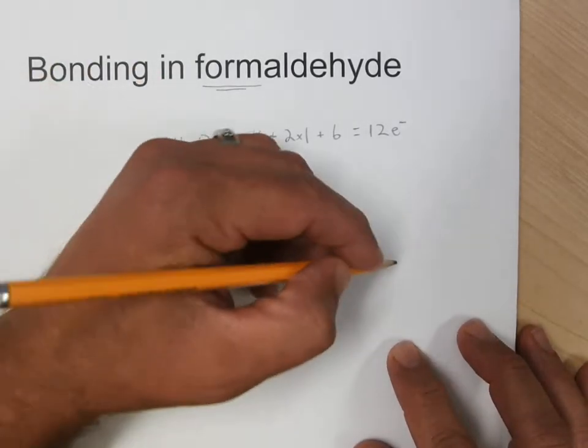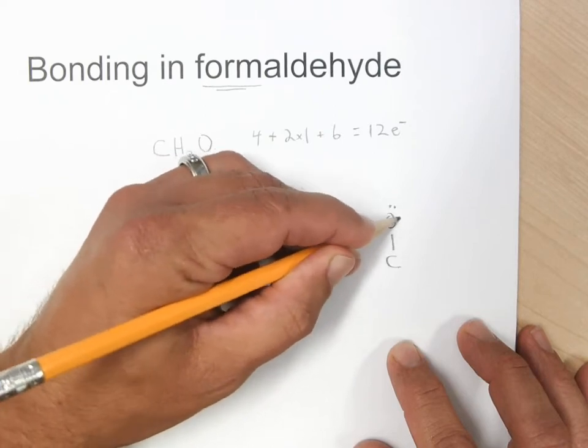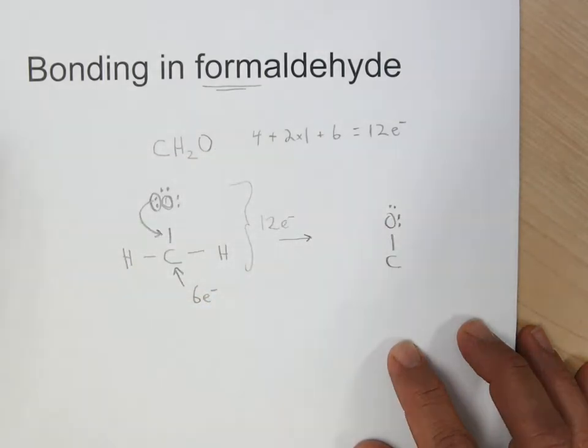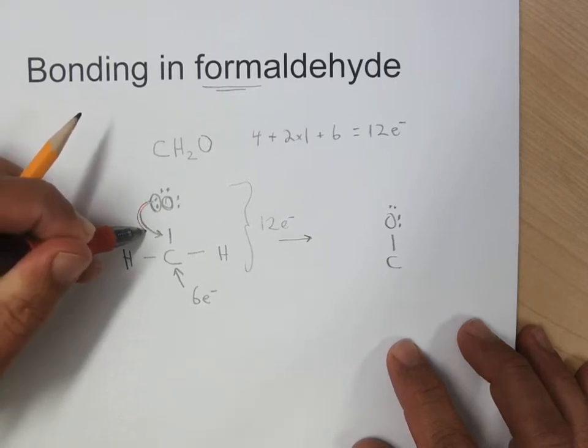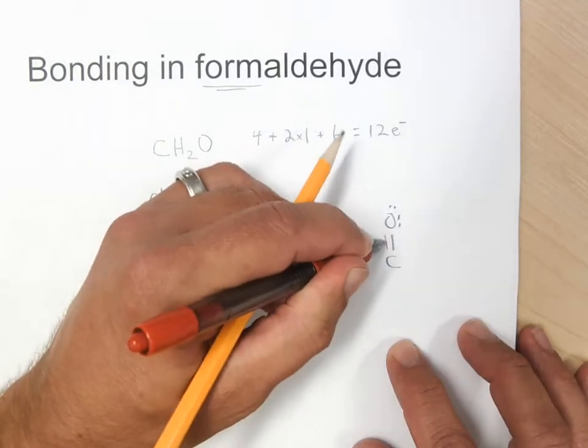So if we go ahead and do that, then we end up with the carbon double bonded to the oxygen. So a lot of times, I like to use a little intelligent color to say, there's the motion of the electrons, and that's the new thing.